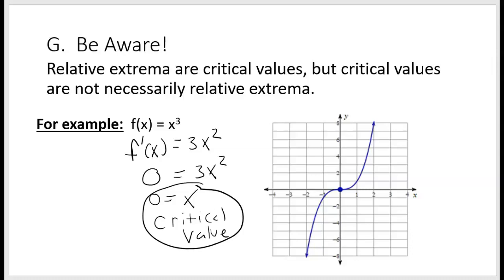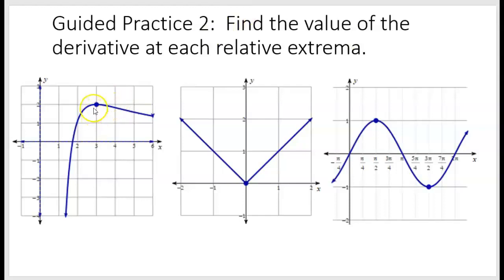Why do we care about critical values — where the derivative is 0 or undefined? Because as we saw in the guided practice, that point f of c might be a relative extrema. It doesn't have to be, but it may be. Relative extrema will always be critical values, but critical values are not necessarily relative extrema. For example, taking x cubed: finding where f'(x) = 3x² equals 0 gives x = 0, a critical value. But looking at the graph of x cubed, even though there's a horizontal tangent line there, that point is not lower or higher than points on both sides — it's not a relative extrema.